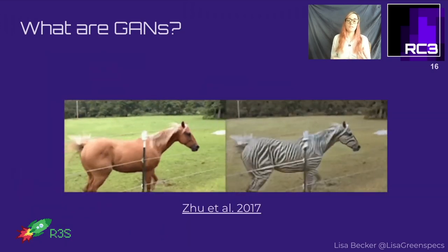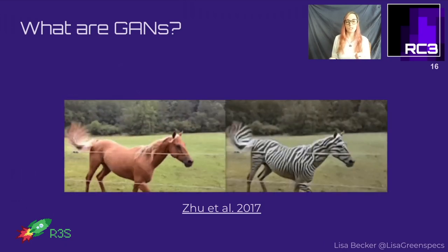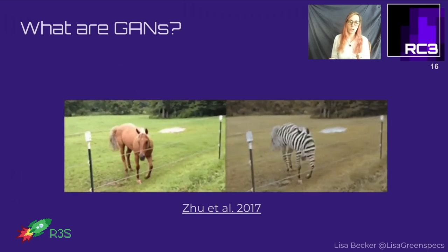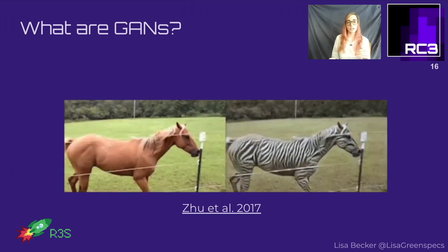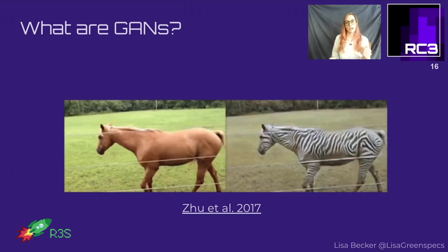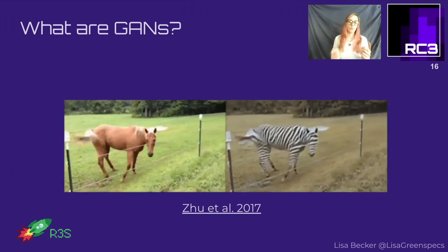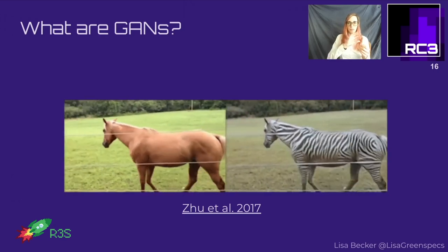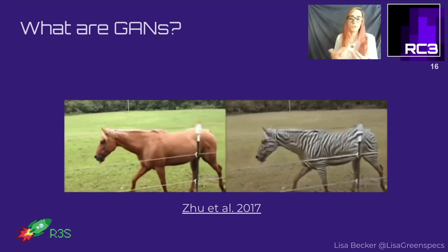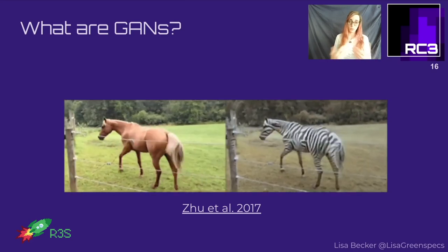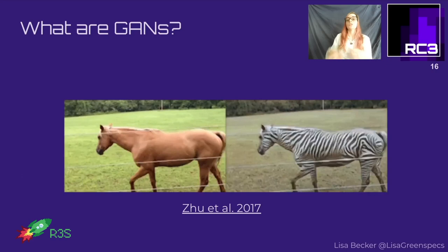Some of you may have seen this popular GIF from a paper by Zhu et al. in 2017, where the inputs were moving horses and images of zebras, and the GAN's goal was to map the pattern of a zebra onto a horse. While it looks very funky as a GIF, if you took a screenshot it would to most of us look like a zebra. So now that you know what GANs are, what are they actually used for?